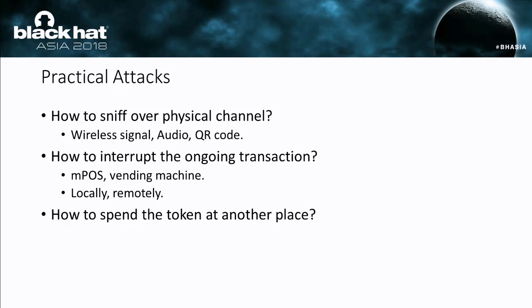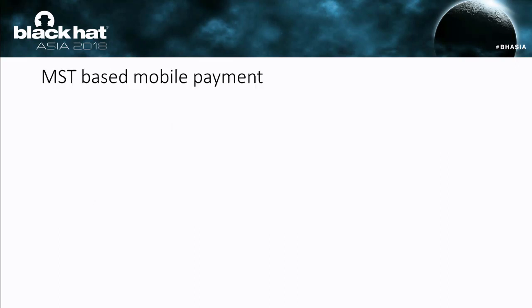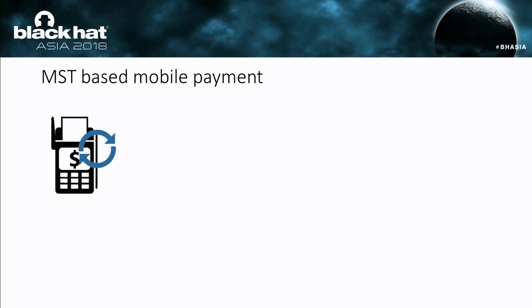We looked at four kinds of payments. The first one is MST-based mobile payment. MST-based mobile payment is popular in the USA because vendors in the USA are hesitant to update their POS machines to support all kinds of newly emerging mobile payments, so most vendors in the USA are still using the traditional magnetic strip card POS machine.